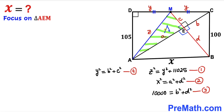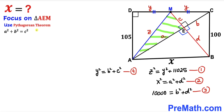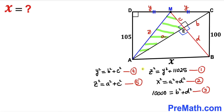Now focusing on right triangle AEM, whose side lengths are a, c, and the longest leg Z. Applying the Pythagorean theorem gives us Z² = a² + c². We call this equation number five. We now have five equations in total.